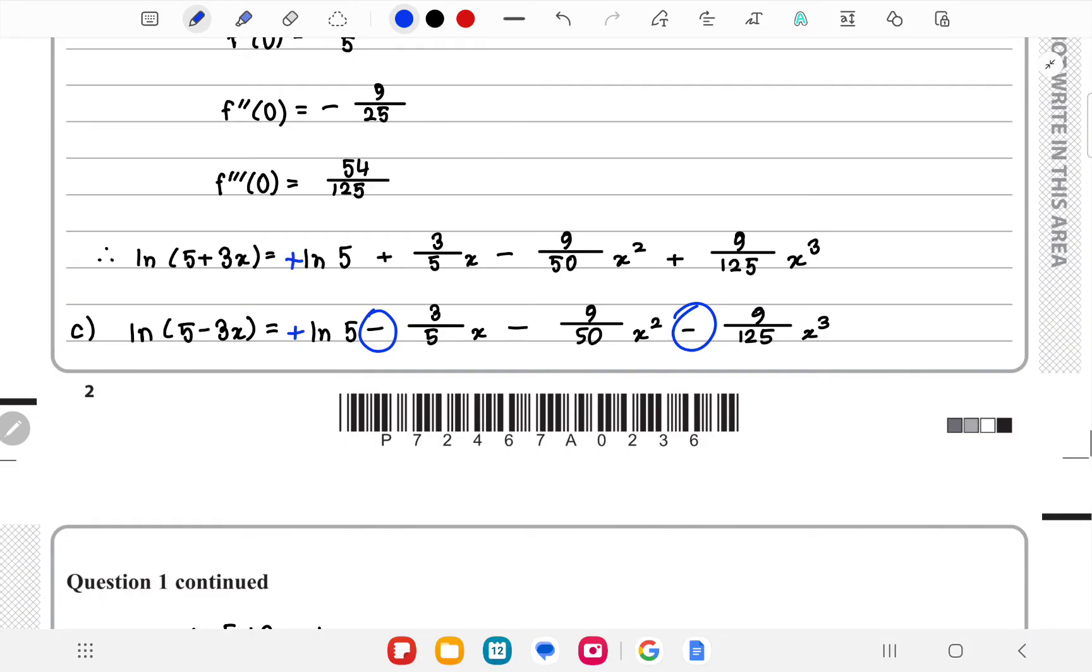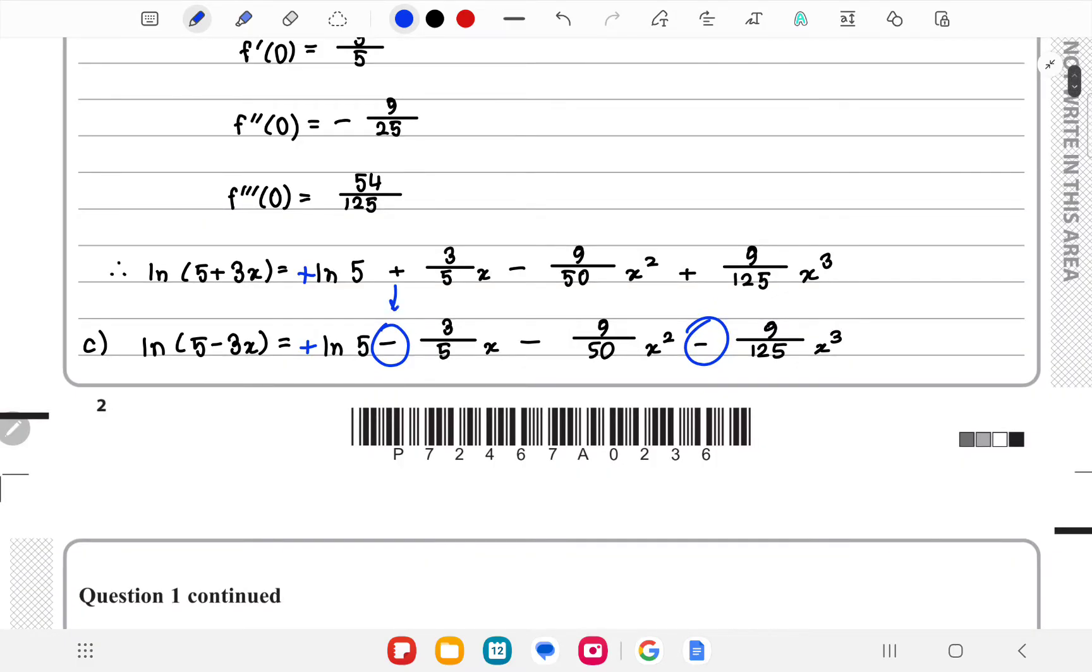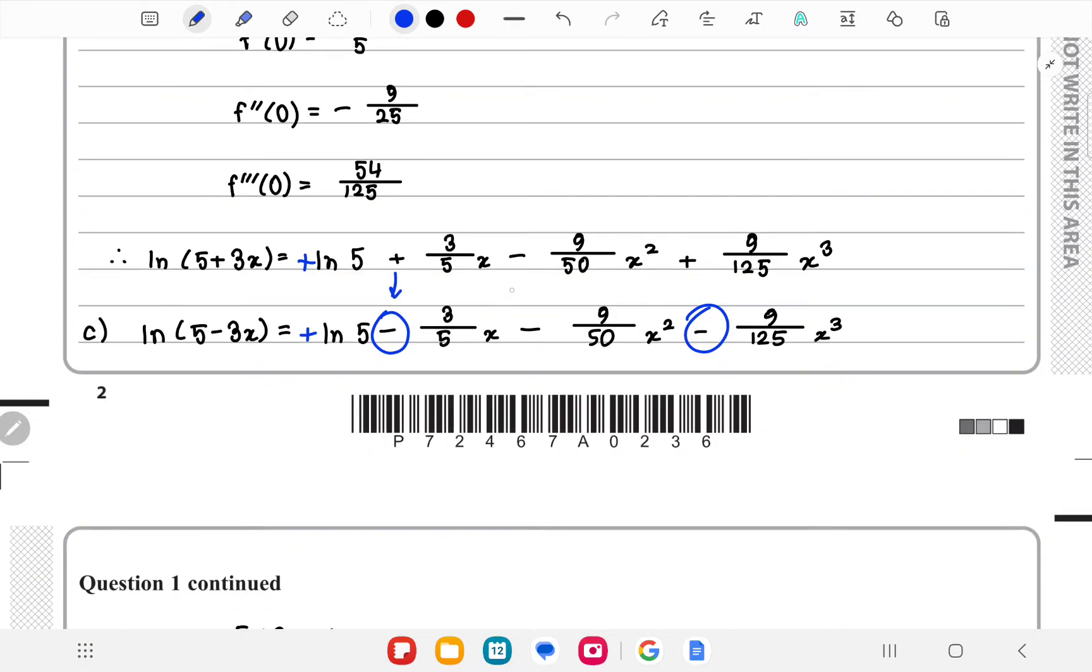This one will have a different sign and this one will have a different sign. So the alternating signs: see, this sign would be the same for both. The second sign is different. Then you have the third sign which is the same. Fourth sign will again be different, fifth sign will be the same, and so on.